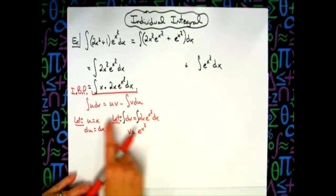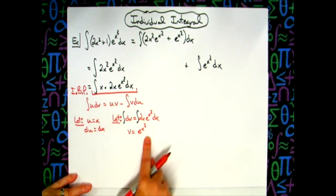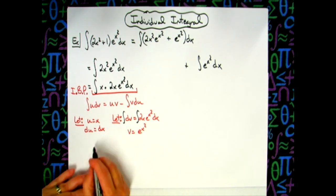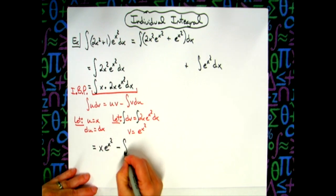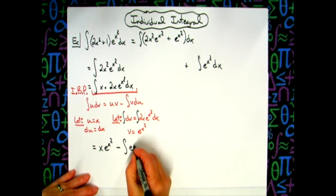Now we're going to apply this formula right here. So we'll go back to black here. So we'll have xe^(x²) minus the integral of e^(x²) dx.